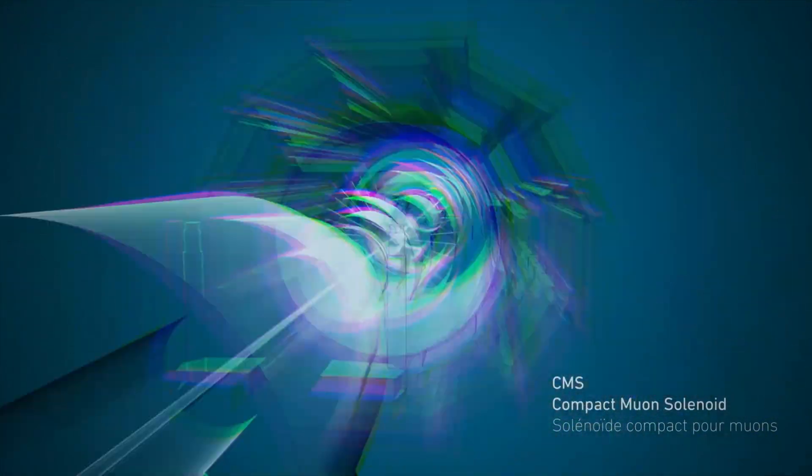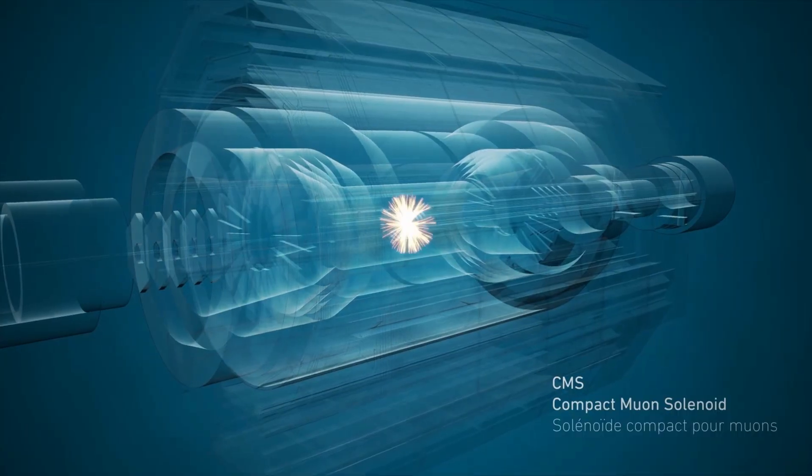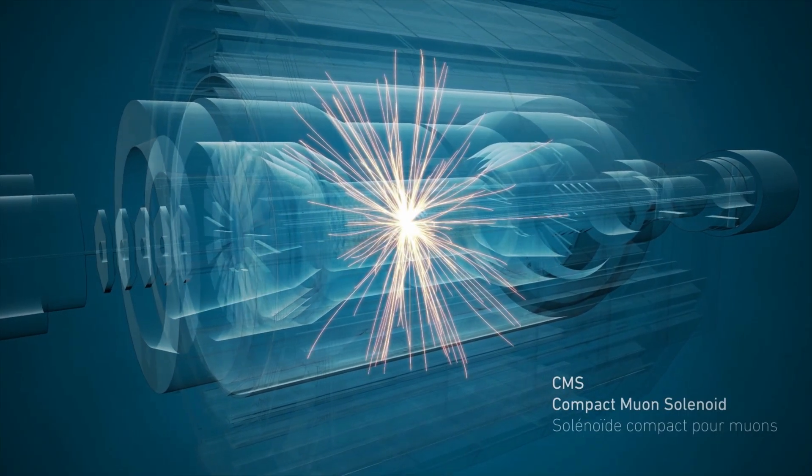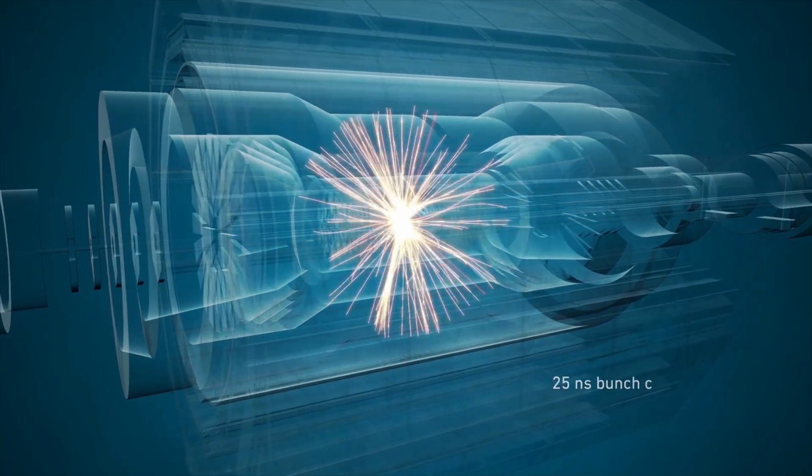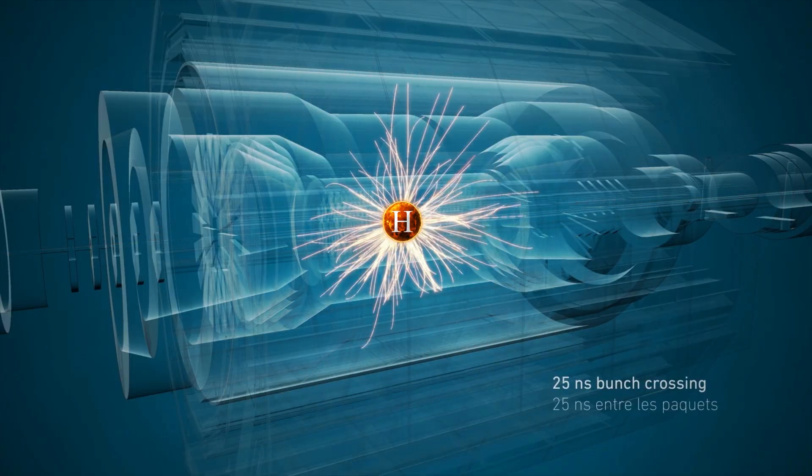The LHC could smash billions and billions of protons into each other at nearly the speed of light. This would rarely produce a Higgs boson, which then decayed immediately into other particles, like two photons.